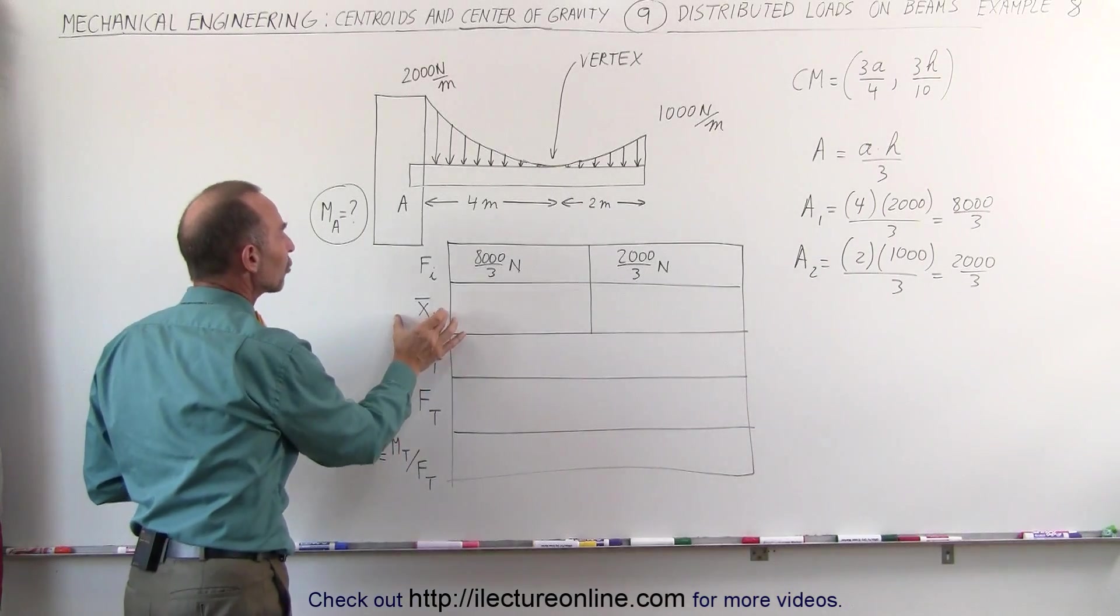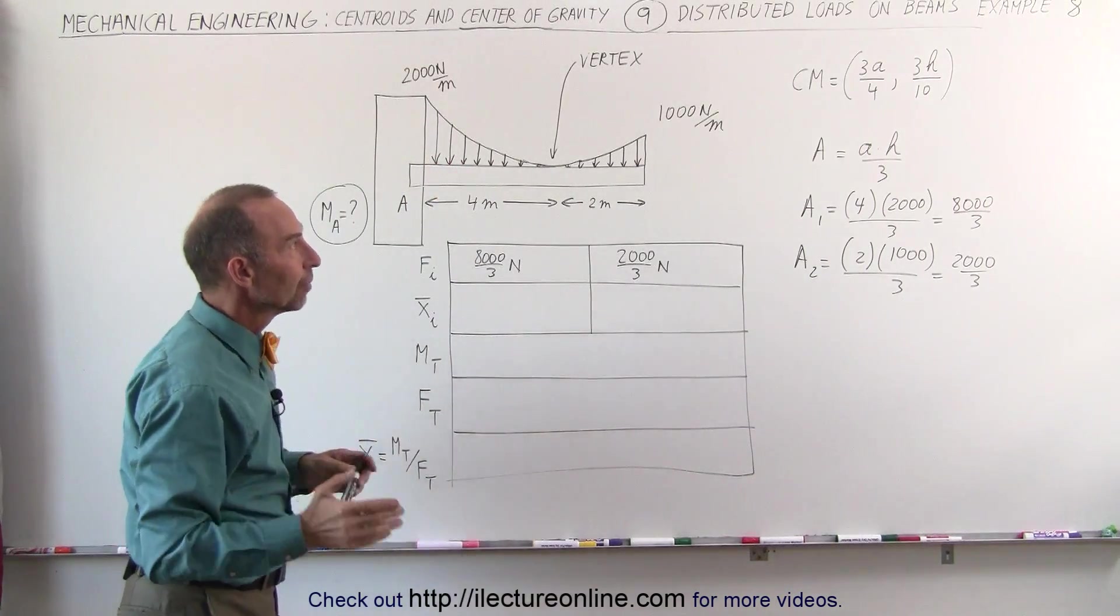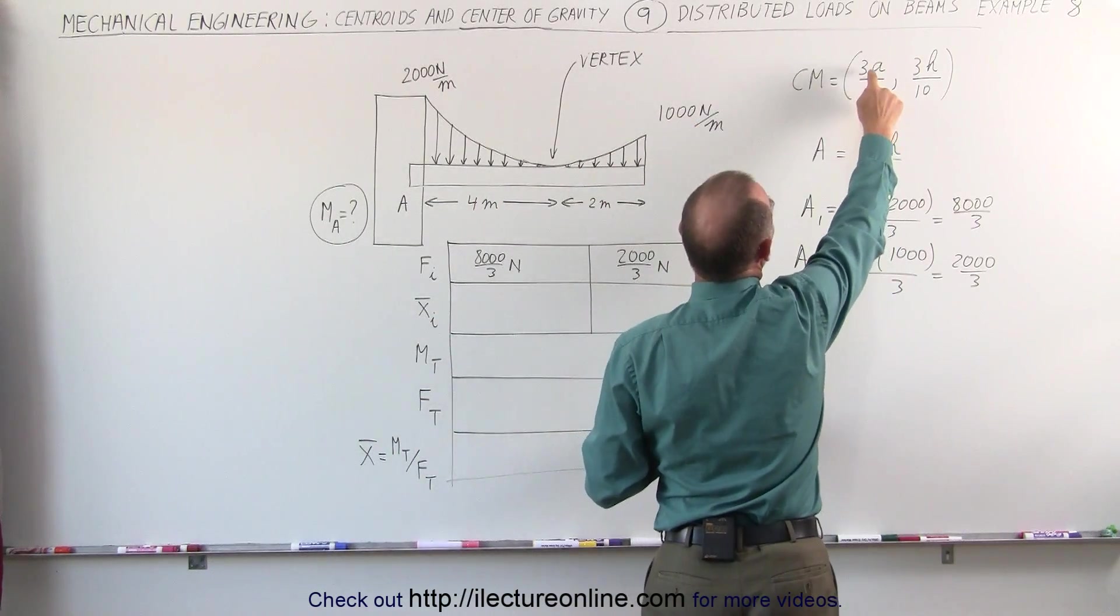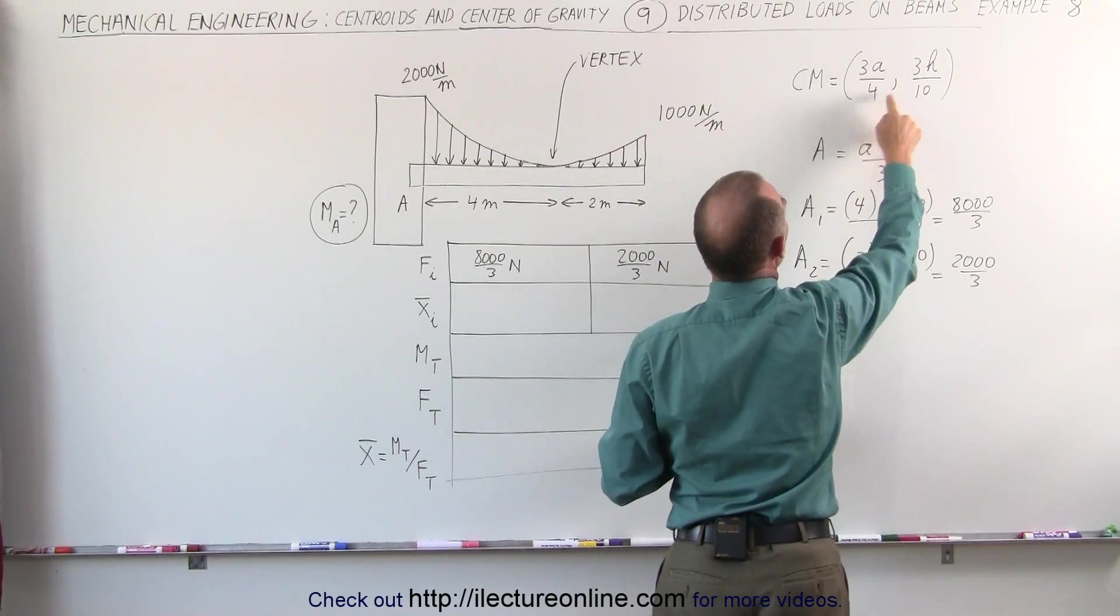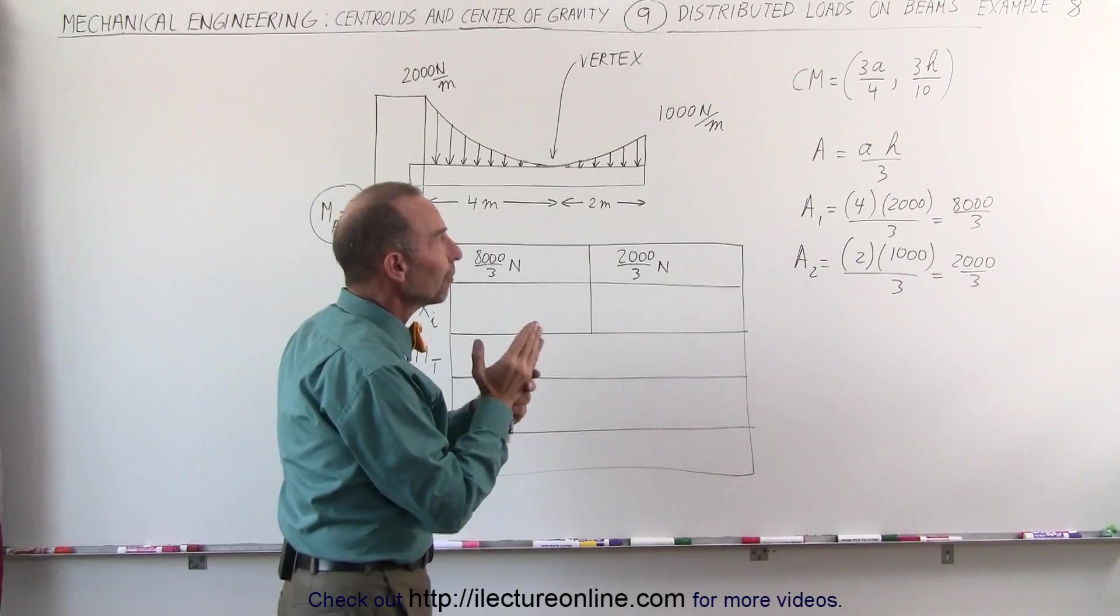Now we need to find the x-coordinate of the centroid of each of those two load segments. To find the center mass of a load segment that looks like a parabola like this, it would be 3A divided by 4 for the x-coordinate, and 3H divided by 10 for the y-coordinate. Remember that is from the vertex.